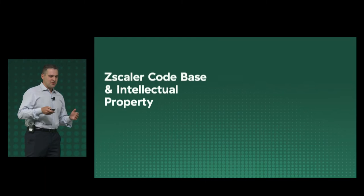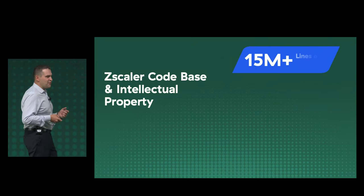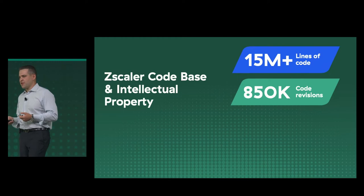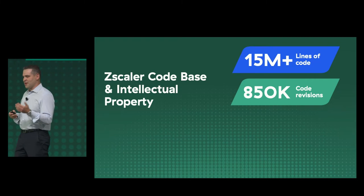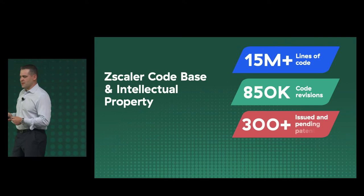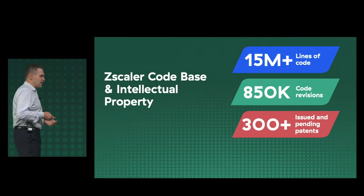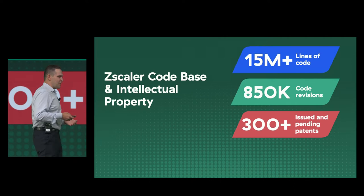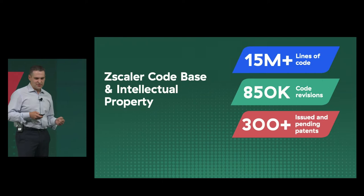Going to the code base: the Zscaler code base is basically 15 million lines of code, and that's increasing daily. It's also 850,000 code revisions, each of which has to be deployed. And it's 300-plus patents that have been issued or are pending. We continue to invest and innovate because a lot of things we have to do in a multi-tenancy world, at our scale, cannot be done with open source or commercial products — they just don't work; they were never designed for this.